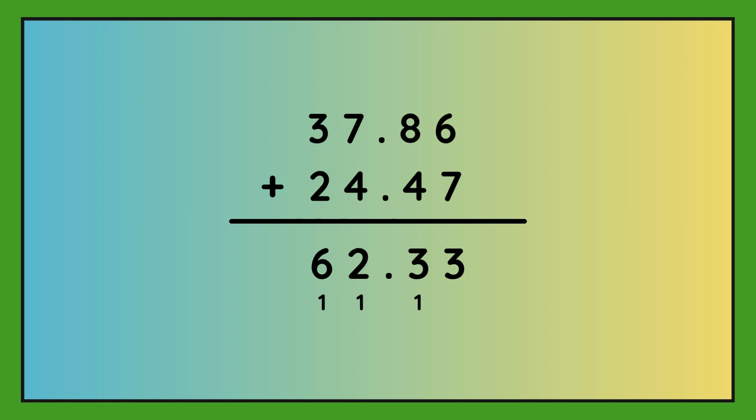The answer is 62.33. So 6 plus 7 is 13. So pop 3 in and carry 1 over. 8 plus 4 plus 1 is 13 again. So pop 3 in, carry 1 over. 7 plus 4 plus 1 is 12. So pop 2 in and carry 1 over. And then 3 plus 2 plus 1 is 6. So your answer is 62.33.